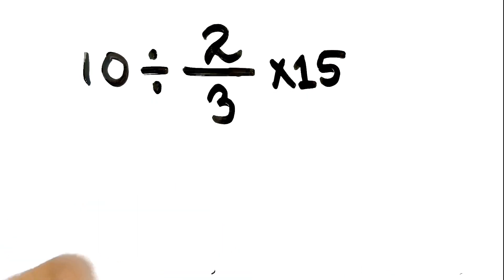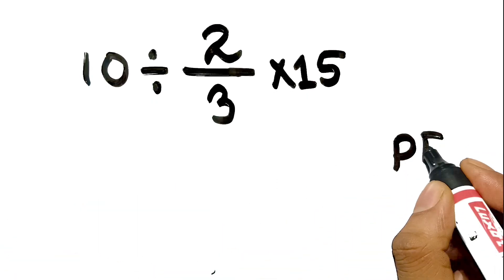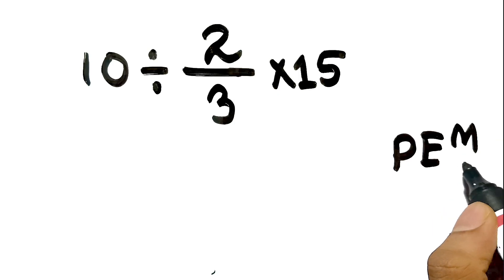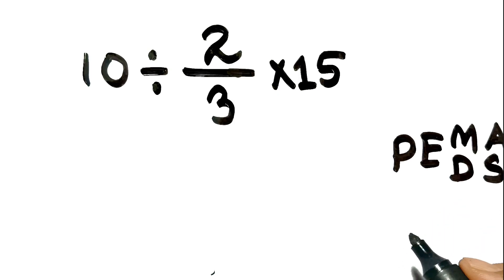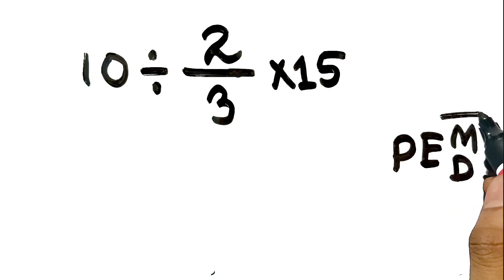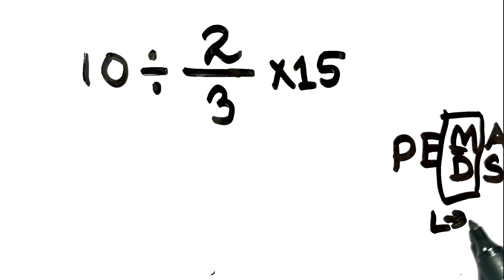Now, back to the problem. The rule says, first we have to do parenthesis, then exponents, then multiplication or division, and finally addition or subtraction. Remember that multiplication and division have equal priority, and we have to work from left to right.